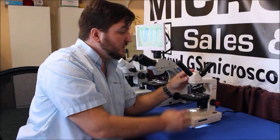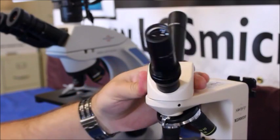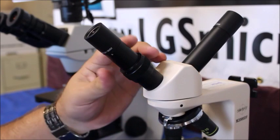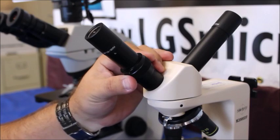So now what we want to do is set it up for the second person. Now we're going to swing this around and you'll notice that this other eye tube has this ring on here and as you turn it it will move the eyepiece in and out.